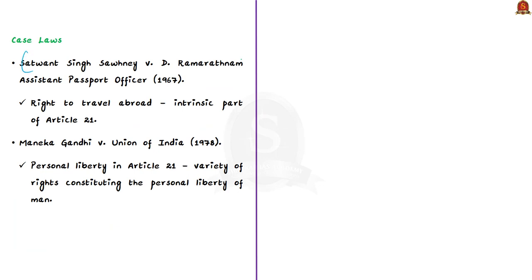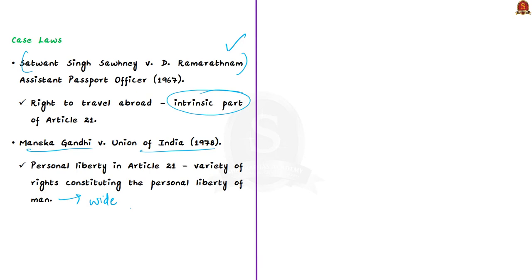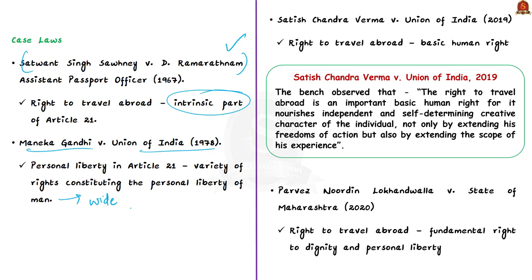The first important case law is Satwant Singh Sawhney vs. D. Ramarathnam (1967), where the Supreme Court held that the right to travel abroad is an intrinsic part of Article 21 and that personal liberty includes the right of locomotion. The second is Maneka Gandhi vs. Union of India (1978), where the Supreme Court held that personal liberty in Article 21 is of the widest amplitude, covering a variety of rights.